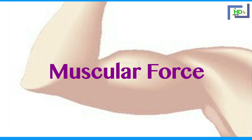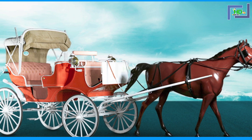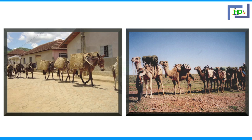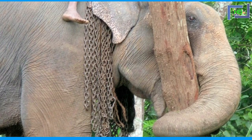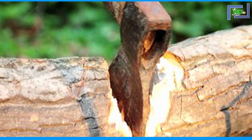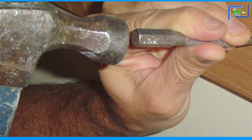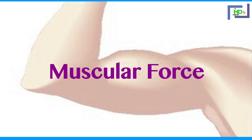However, if the force required is too large and our body is incapable of producing it, we use the muscular forces of animals. For example, horses are used for moving carriages; donkeys and camels are used for carrying heavy loads; and elephants are used for moving logs in jungles. Sometimes we use non-living objects — for example, an axe for cutting wood, a knife for cutting fruits and vegetables, and a hammer for driving a nail into the wall. In performing these activities, we use our muscular force.